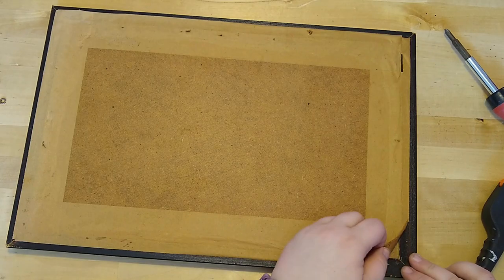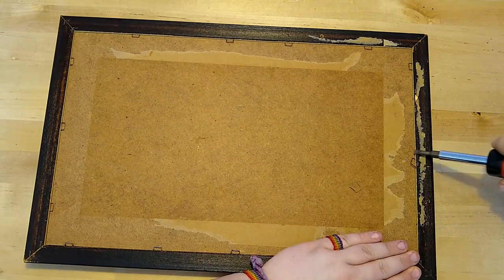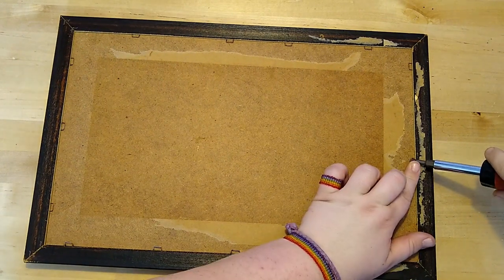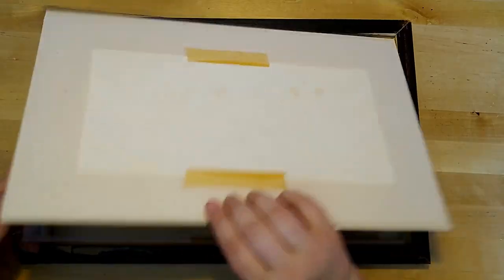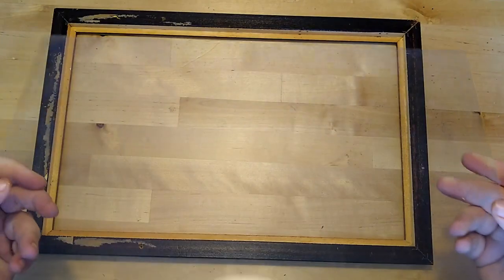Next up is this old brittle paper tape and these staples. Now I can remove the particle board, the multi-layered picture and the glass pane.